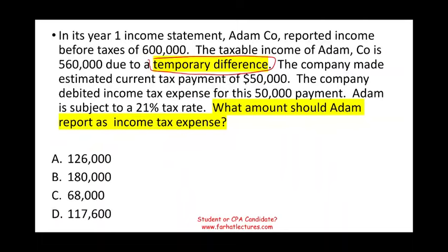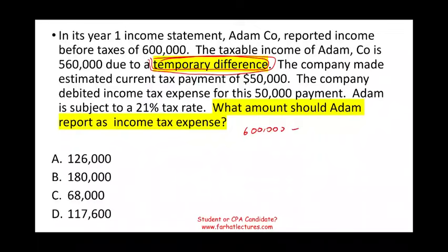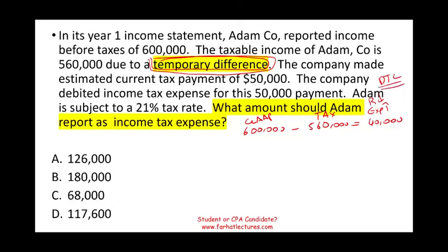Now let's change the scenario — same example, except this $40,000 difference is now a temporary difference. GAAP income is $600,000, IRS taxable income is $560,000. For tax purposes you're paying less taxes now because taxable income is lower by $40,000, due to less revenue taxable now or more expenses deductible now. As a result, you will have a deferred tax liability because in the future those temporary items reverse, meaning you'll have more revenues and less expenses — and therefore more taxes owed.